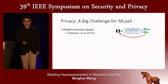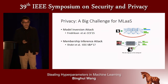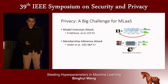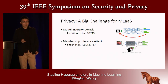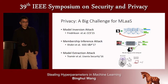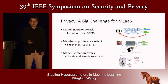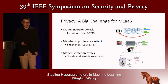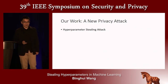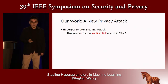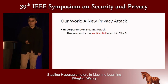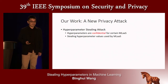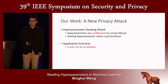However, privacy is a big challenge for machine learning as a service. For instance, the model inversion attack leverages model predictions to recover information about training samples. The membership inference attack tries to predict if an input belongs to the training dataset. The model extraction attack steers model parameters by querying a machine learning model. Our work presents a new privacy attack called the hyperparameter stealing attack.